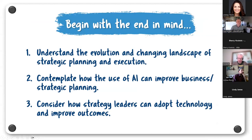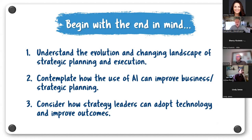Let's begin with the end in mind. We're going to go through a process, and hopefully at the end you understand the evolution and changing landscape of strategic planning and execution — because what we plan tends to happen. Hopefully, you'll contemplate how AI can improve your business and strategic planning, and consider how strategy leaders can adopt technology to improve outcomes.